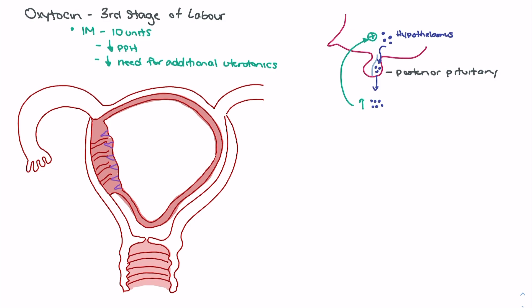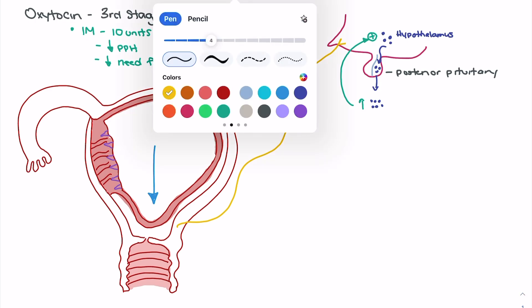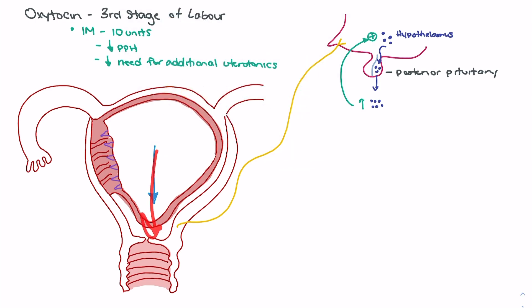As the birthing process begins and the fetus engages with the cervix, that pressure is noted by the nerves around the cervix, and that signal is sent to the brain. Pressure from the fetus pushing down on the cervix stimulates the nerve fibers around the cervix, which signals up to the pituitary gland and hypothalamus, causing release of oxytocin from the posterior pituitary. As oxytocin is released, it stimulates the positive feedback loop, leading to further release of more oxytocin.